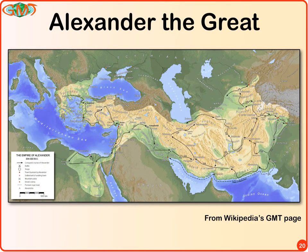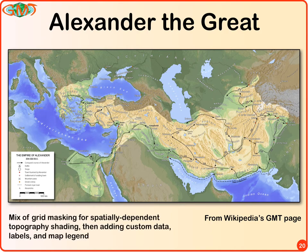What's Alexander the Great doing here? We find that although GMT is used widely in Earth, ocean, and sometimes space sciences, it's also used by all kinds of people. We get email from them showing us these things. This is a person working on historical maps of Alexander the Great's empire — a GMT map combining spatially-dependent topography shading highlighting his empire with custom data about events, custom symbols identifying battle scenes, and so on. This image is actually from the Wikipedia page, which we don't maintain at all.